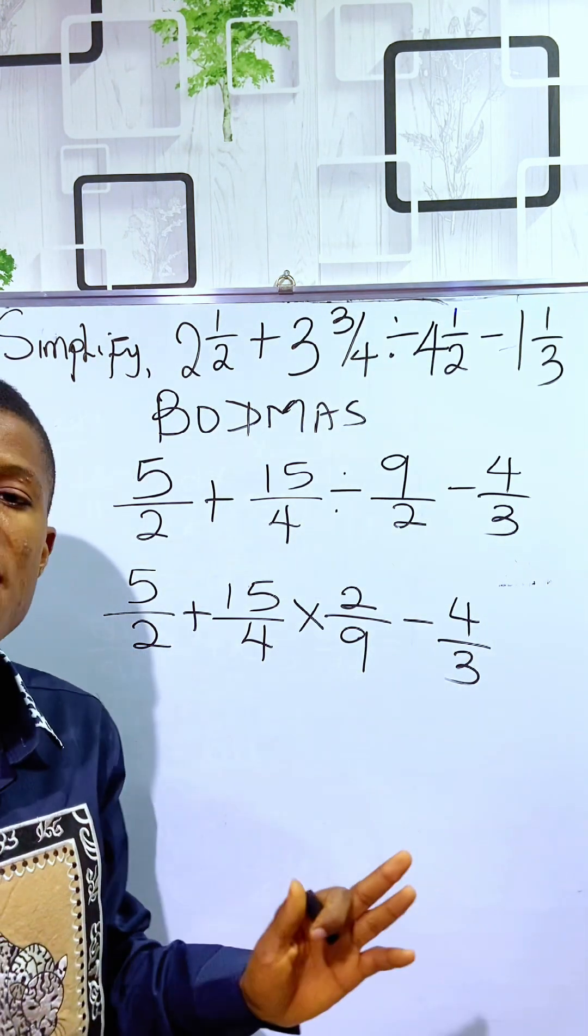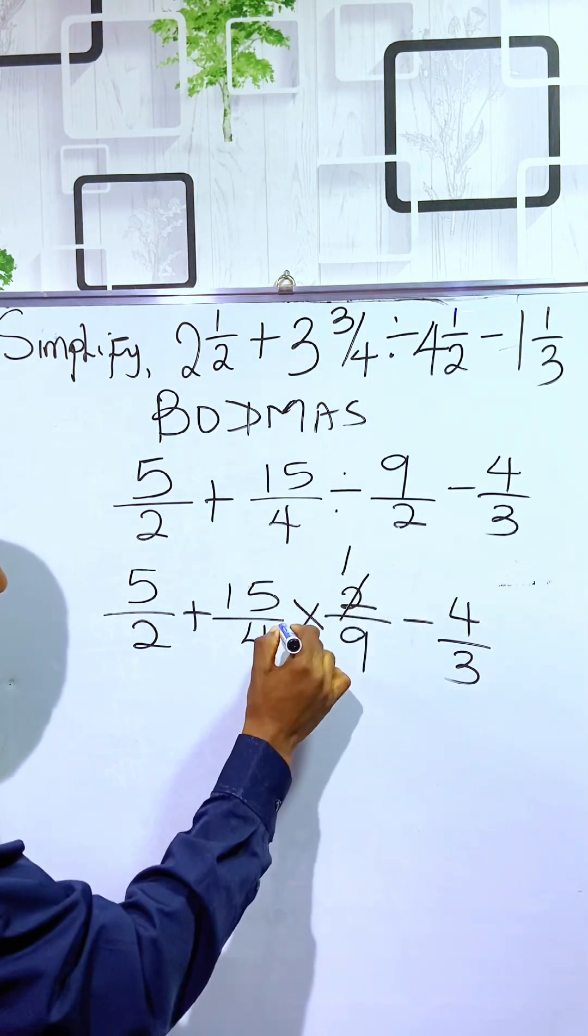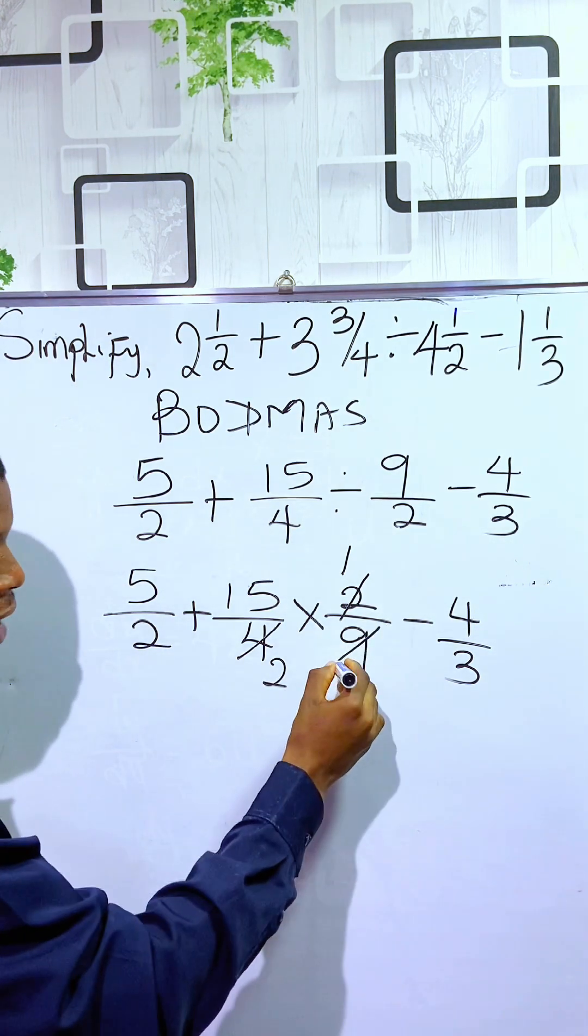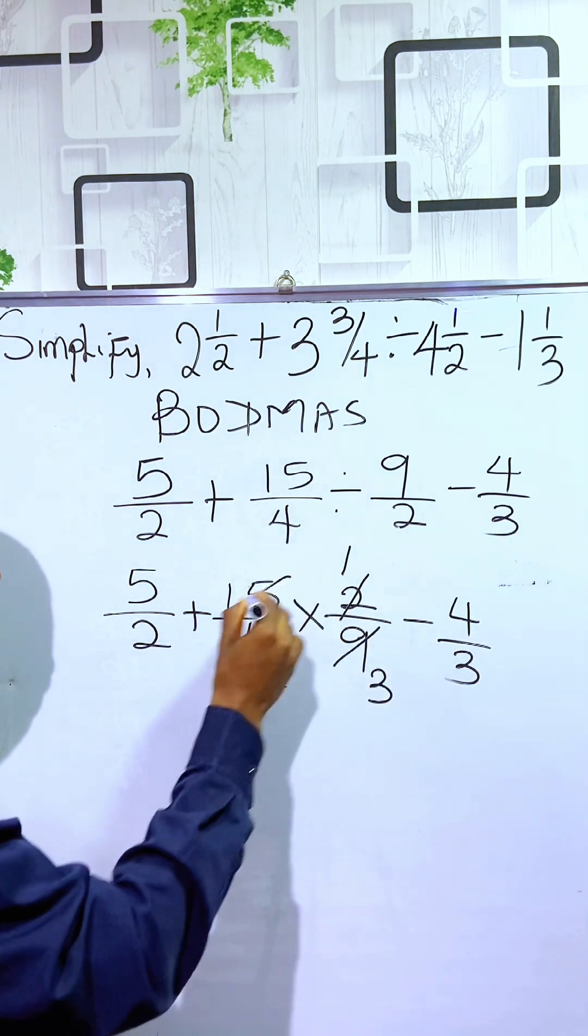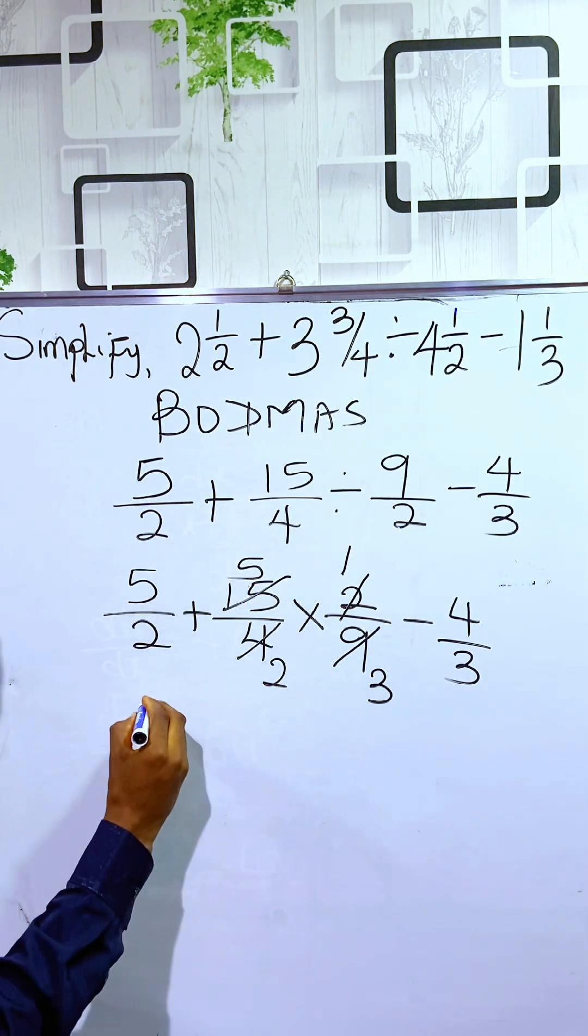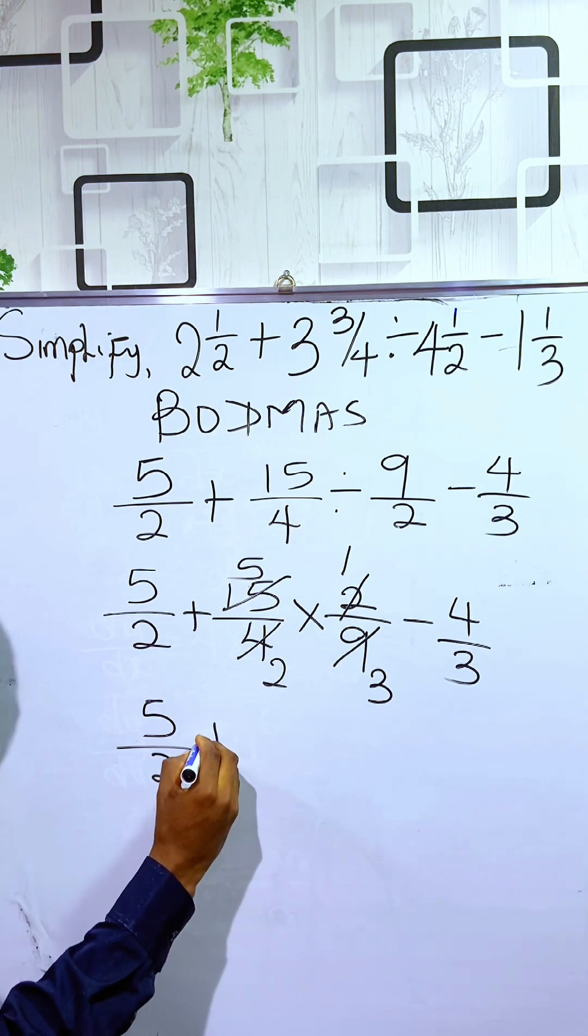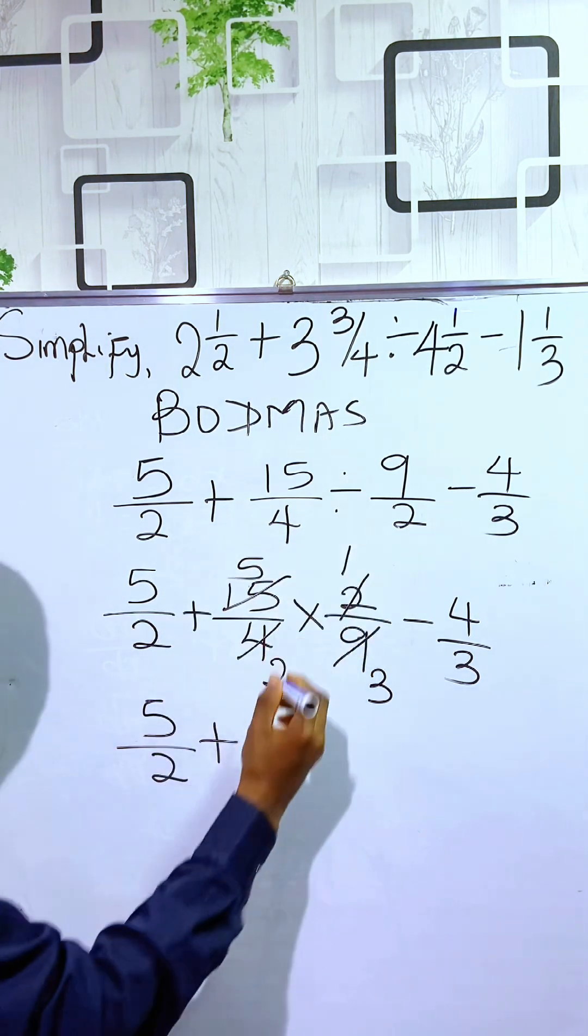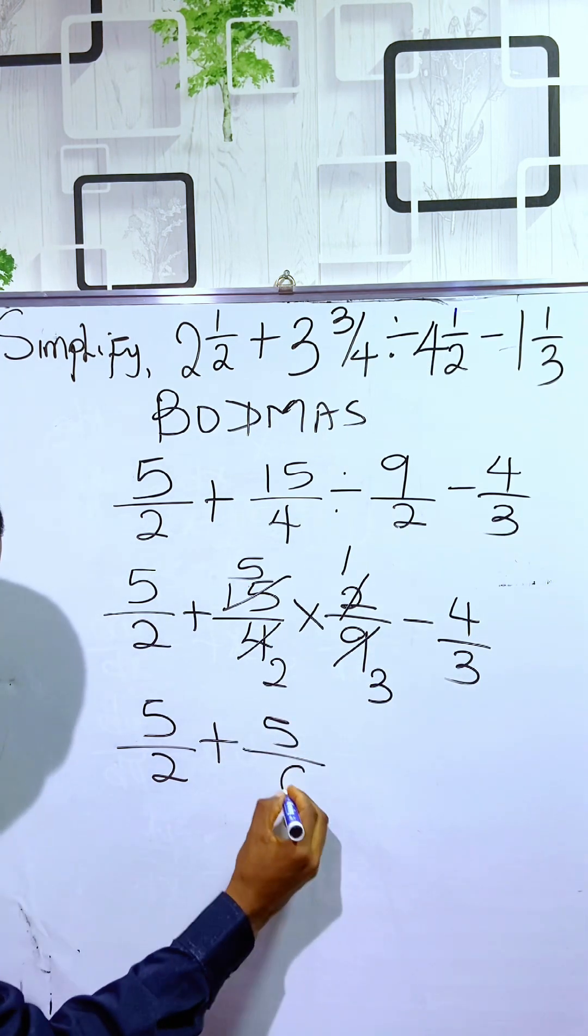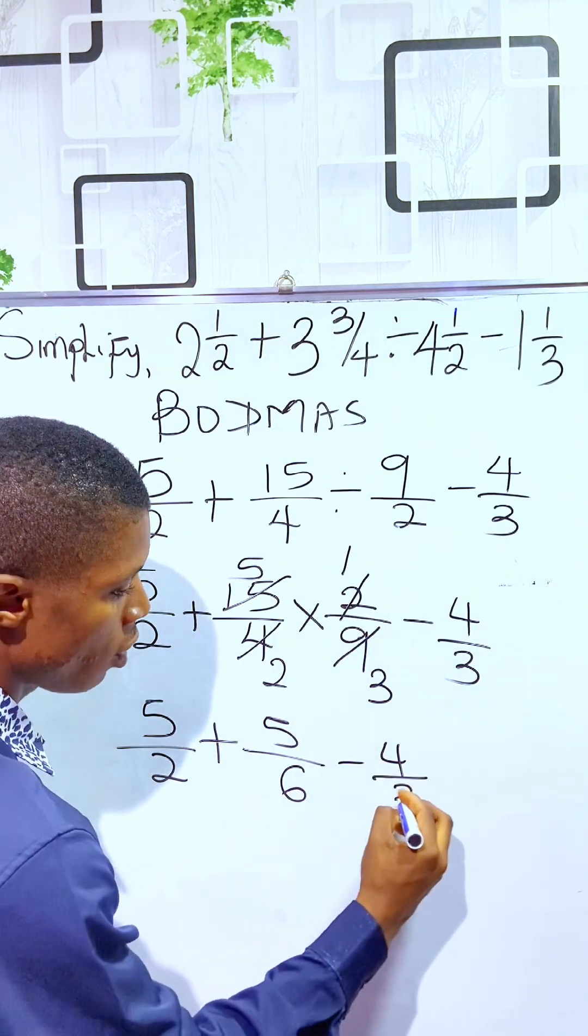Then, since we are multiplying, we can simplify. 2 can divide 4 to get 2. 2 can divide 2 to get 1. 3 can divide 15 to get 5. 3 can divide 9 to get 3. So, here, at the simplified form, I have 5 over 2 plus... Then, 5 times 1 is 5 over 2 times 3 is 6. Then, minus 4 over 3.